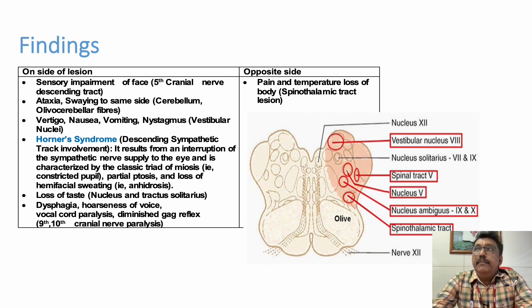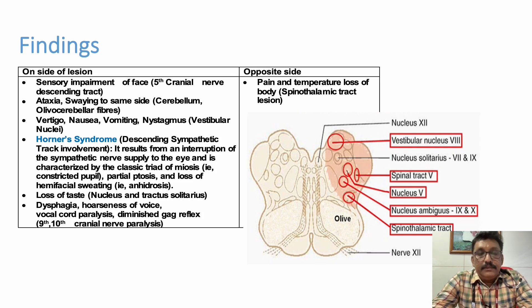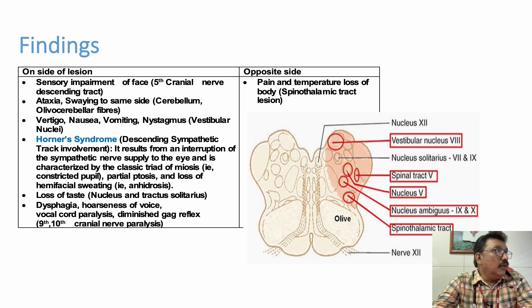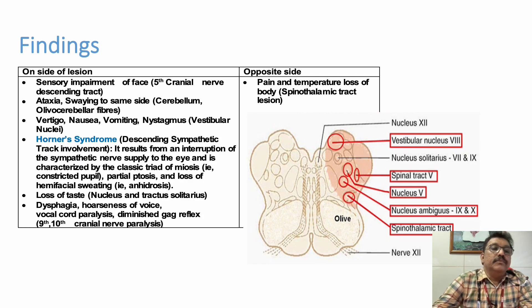This is very important for an ER physician, because these patients — posterior circulation stroke patients, especially involving the medulla — can have aspirations, aspiration pneumonia, and complications due to aspiration. So we have to be very careful when dealing with posterior circulation syndromes.